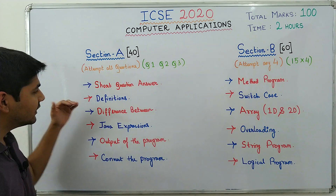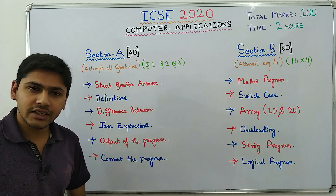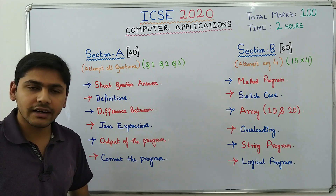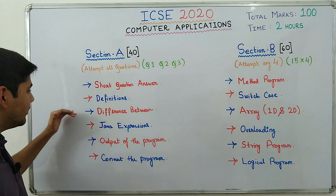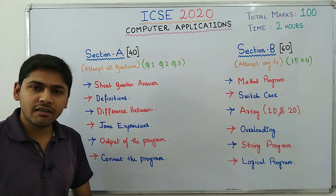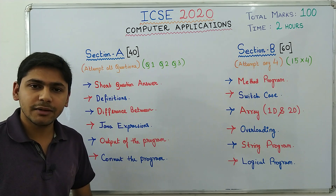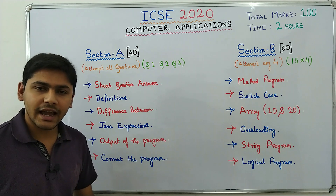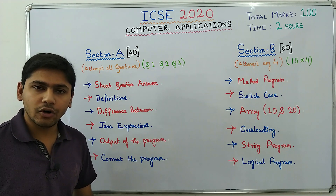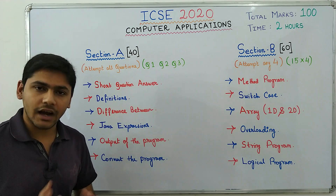Then you will have definitions — direct definitions will be asked like define encapsulation, define inheritance, define an object, define a class. Then you will have 'difference between' questions. Three to four difference between questions will definitely be there in your question paper — for example, state the difference between call by reference and call by value, between boxing and unboxing, between while loop and do while loop, and between isUpperCase and toUpperCase.